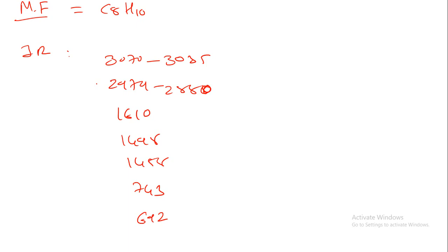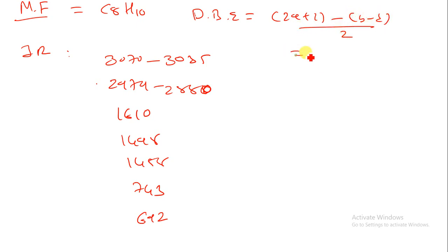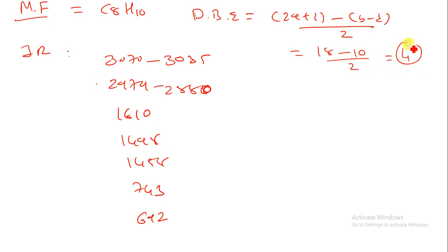First, calculate the DBE: (2A + 2 - B) / 2. Here A=8 carbons: 8×2=16, 16+2=18, minus B=10 hydrogens, no nitrogen. So (18-10)/2 = 8/2 = 4. If you are getting a DBE value of 4, you can say the compound should have a benzene ring.